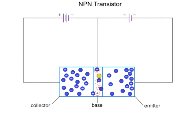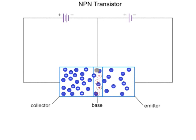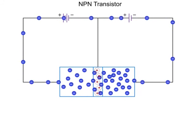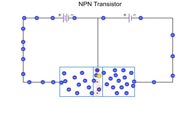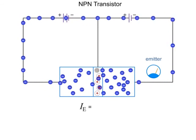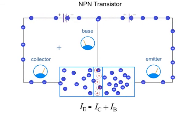This is a very small amount compared to the current moving through the base into the collector. In an NPN transistor, the emitter current is the sum of the collector current plus the base current.